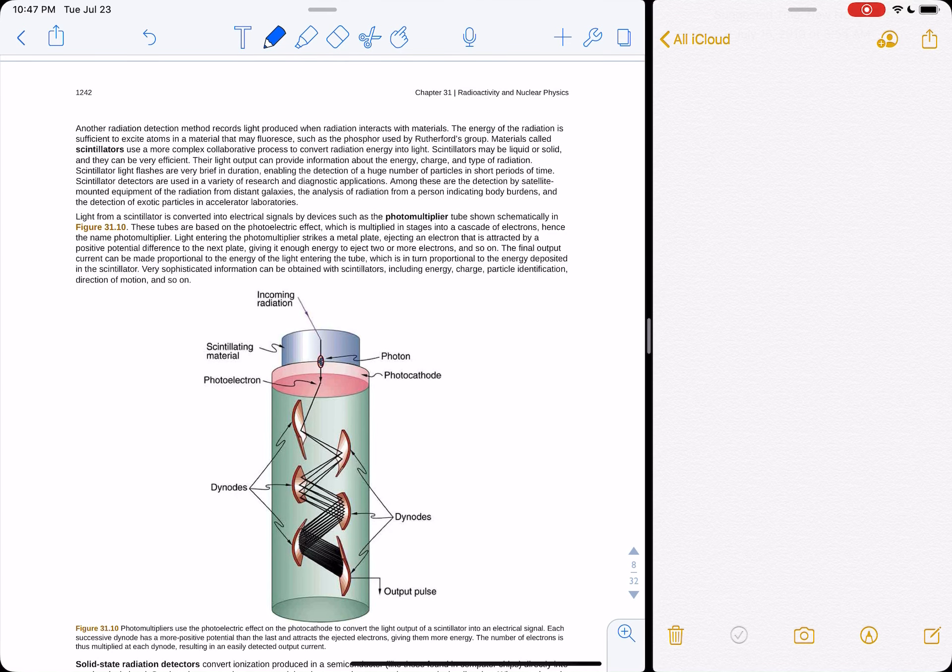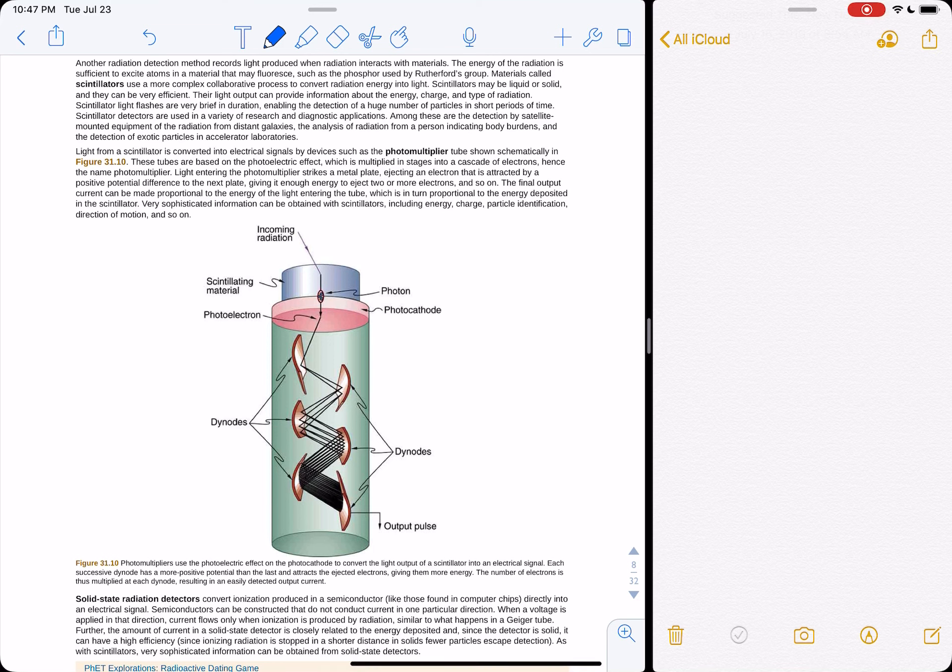Another way to detect radiation is with something called a photomultiplier tube, or a PMT. And a PMT works based on the photoelectric effect. So a photon comes in, hits the surface of, well, there's two ways. Okay, this is getting a little ahead of things. There's a scintillating material here. Let's say we don't have the scintillating material.